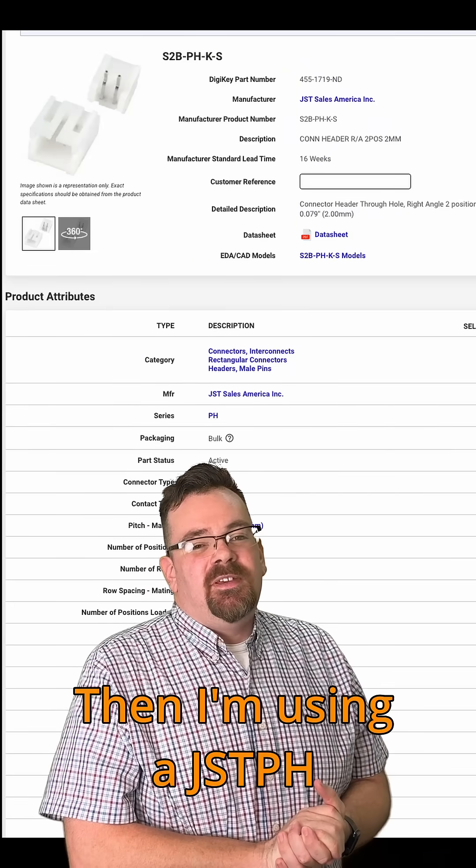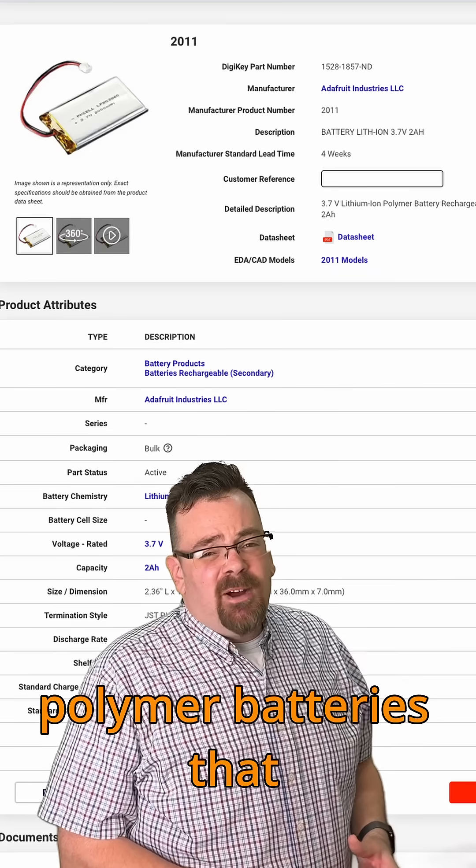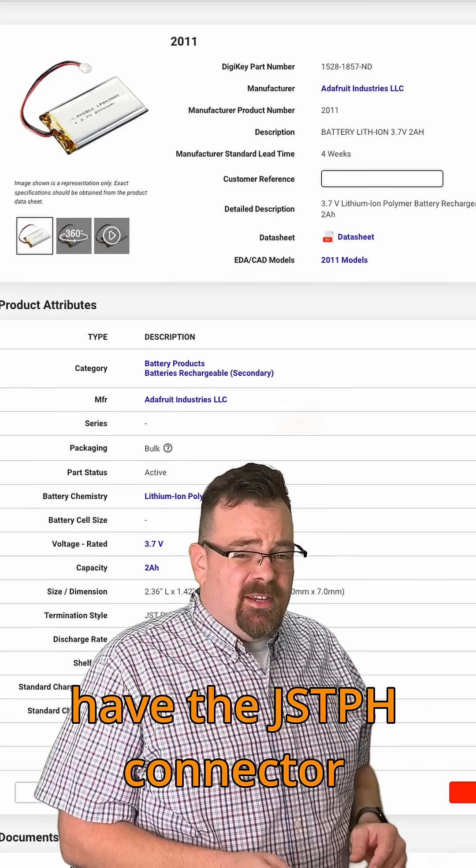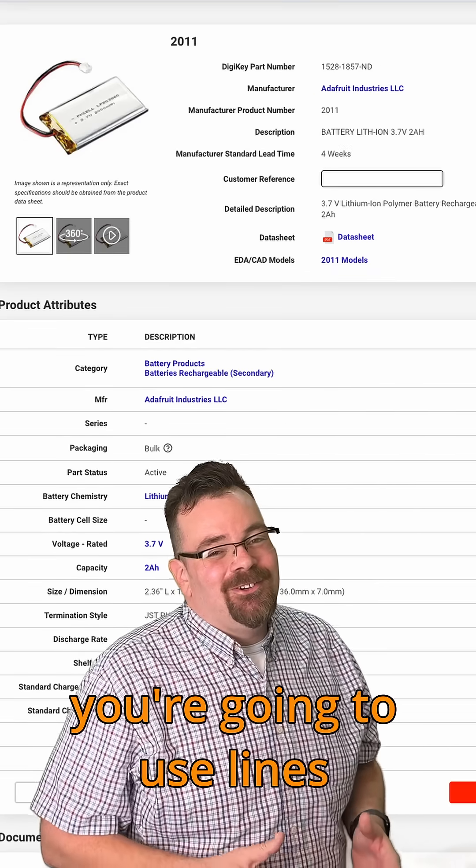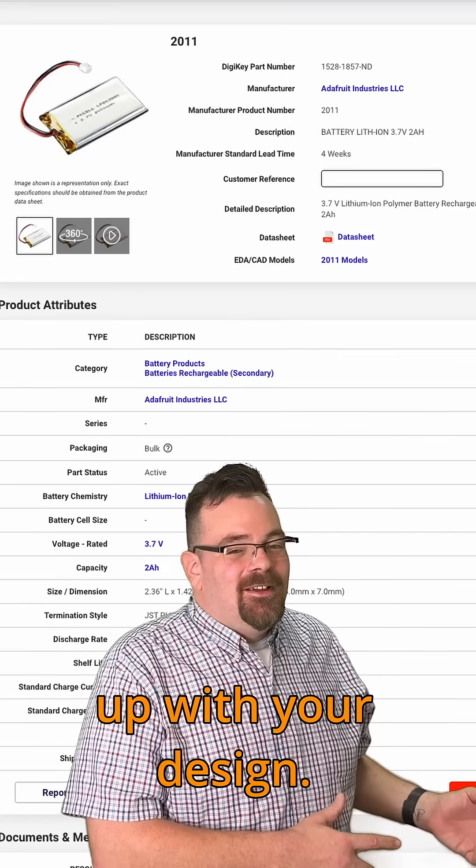And then I'm using a JSTPH connector for the battery. You can buy lithium polymer batteries that have the JSTPH connector already on them. You just want to make sure that the connector on the battery that you're going to use lines up with your design.